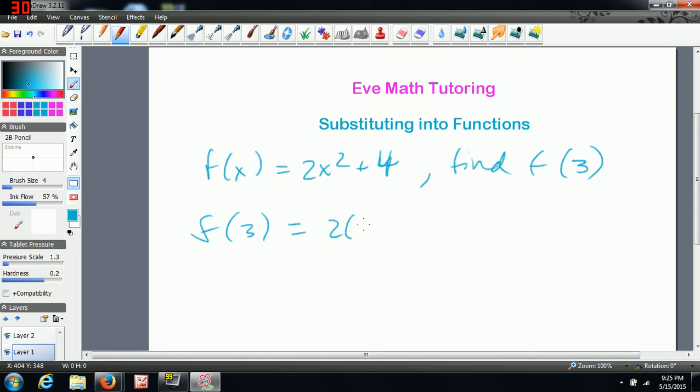So f of 3 would be equal to 2 times 3 squared plus 4. And then we're going to use BEDMAS. So we're going to do exponents first, then multiplication, and then finally addition. So our answer would be 22.